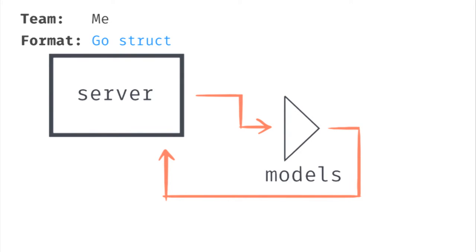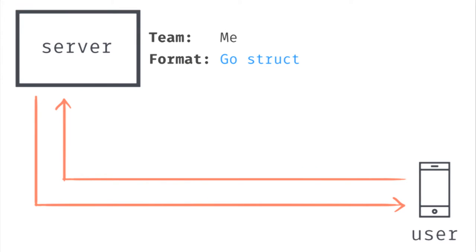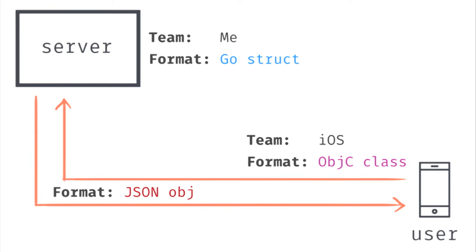Then we have the models that the data science team built, which are running algorithms to predict the baby's state and future. We thought a lot about how to implement the models and ended up going with a Go implementation, which was challenging because there aren't as many data science libraries in Go as in Python or R. But we did it mostly so that we could reuse the Go structs. The final bit was the end user or iOS device — JSON again, turning into an instance of an Objective-C class.